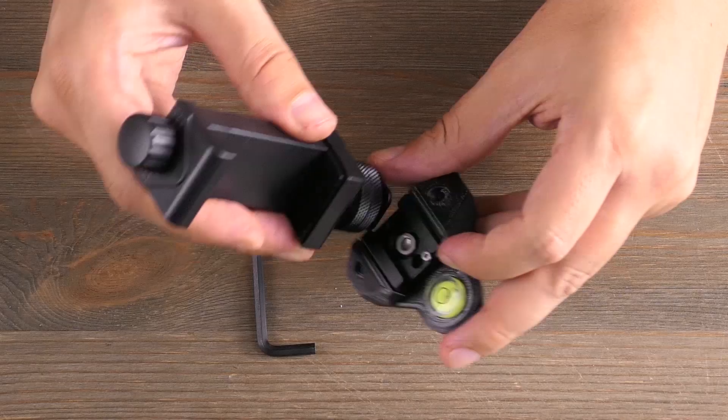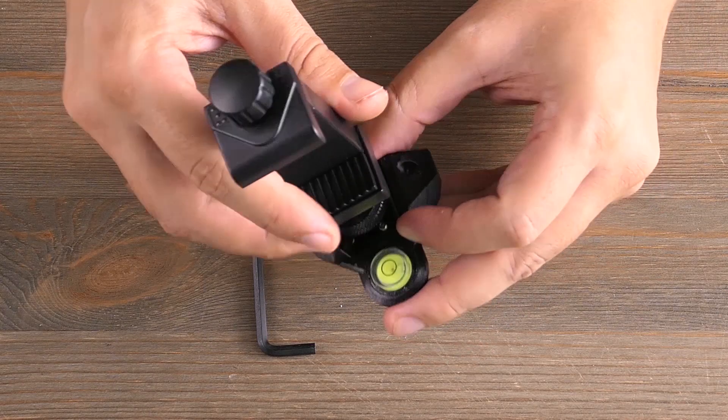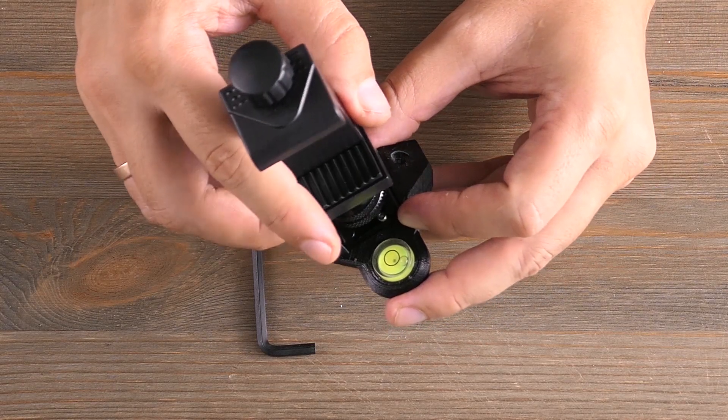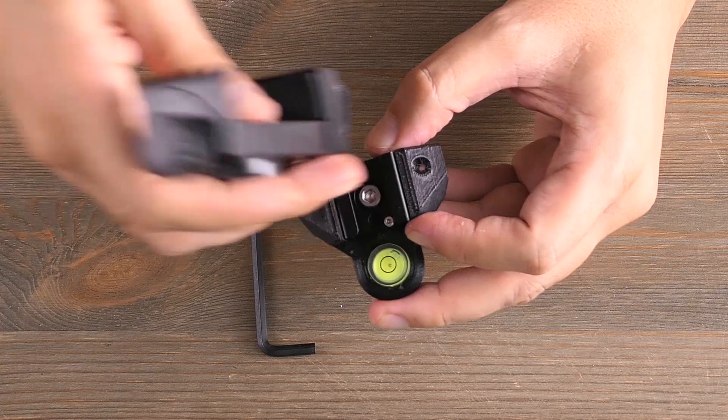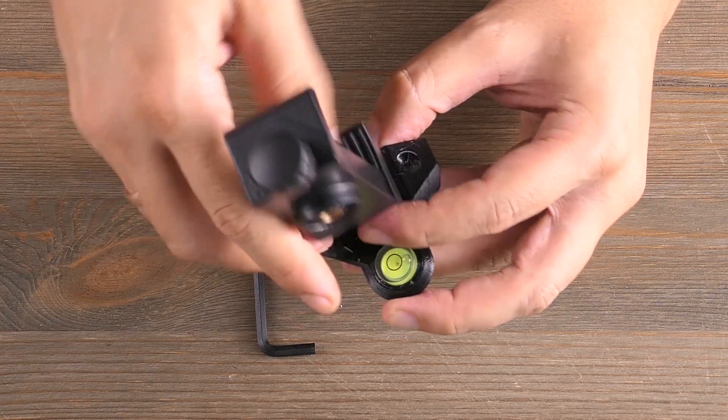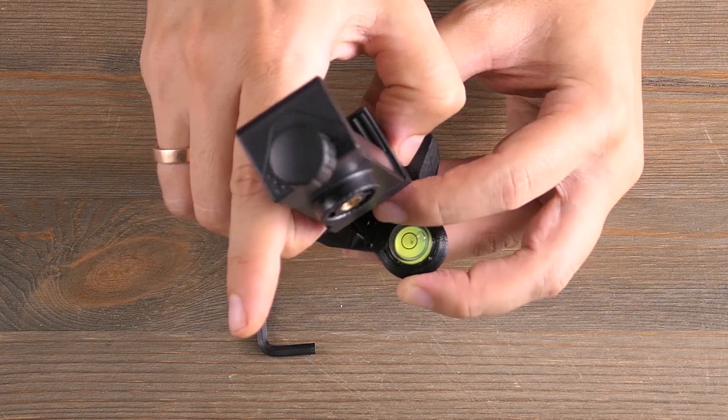Now the smartphone holder can be placed on the flash mount. Use the button ring to tighten it.